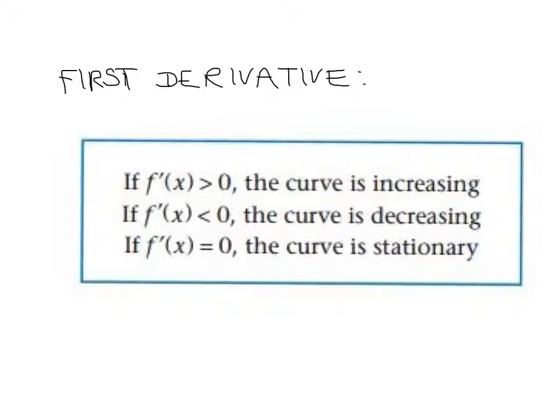Here's the theory in a nutshell for finding stationary points, points of concavity, and inflection. The first derivative shows you if the curve is increasing or decreasing. If the first derivative is bigger than zero, it's increasing; less than zero, decreasing.